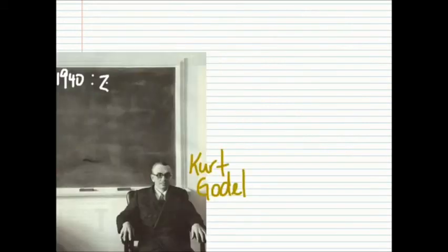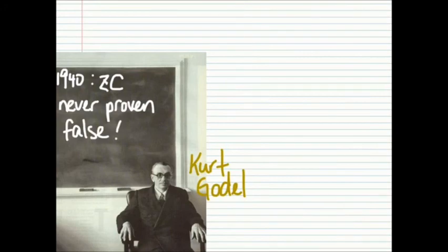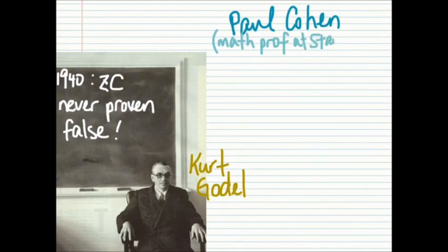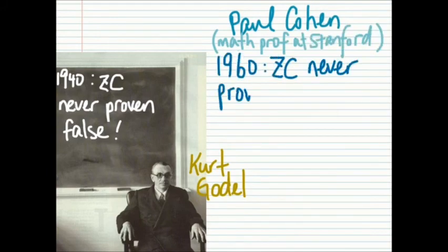In 1940, Gödel proved this model will never be proven false. In 1963, Paul Cohen proved this model is independent of other axioms of set theory, and therefore cannot be proven true either.